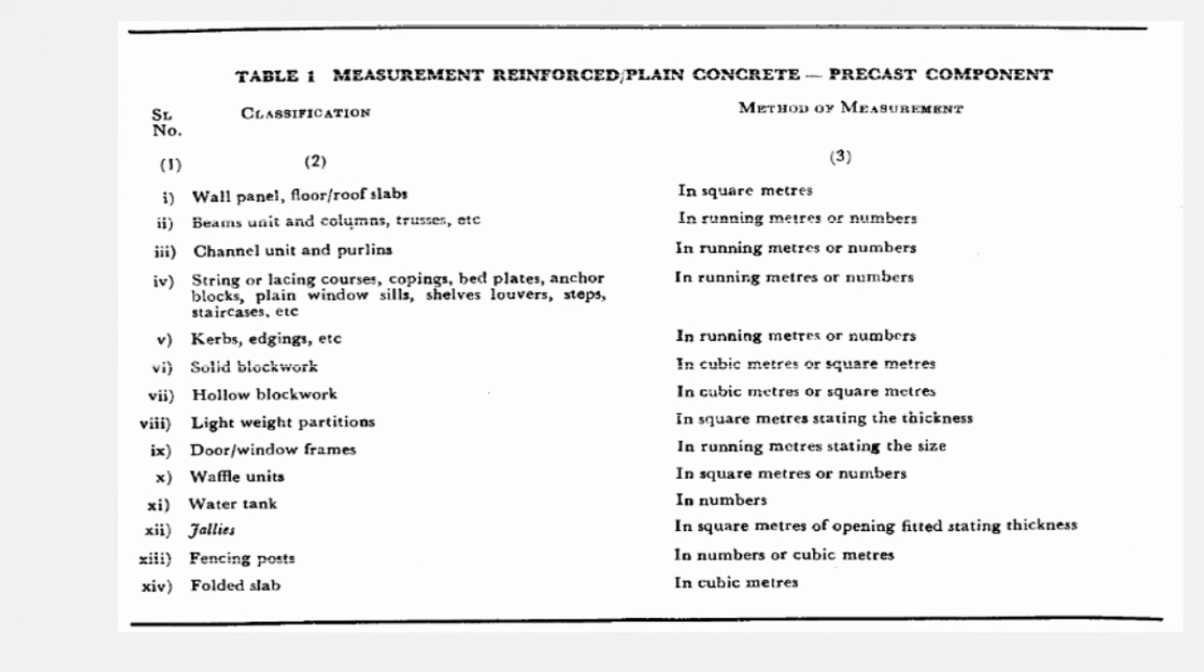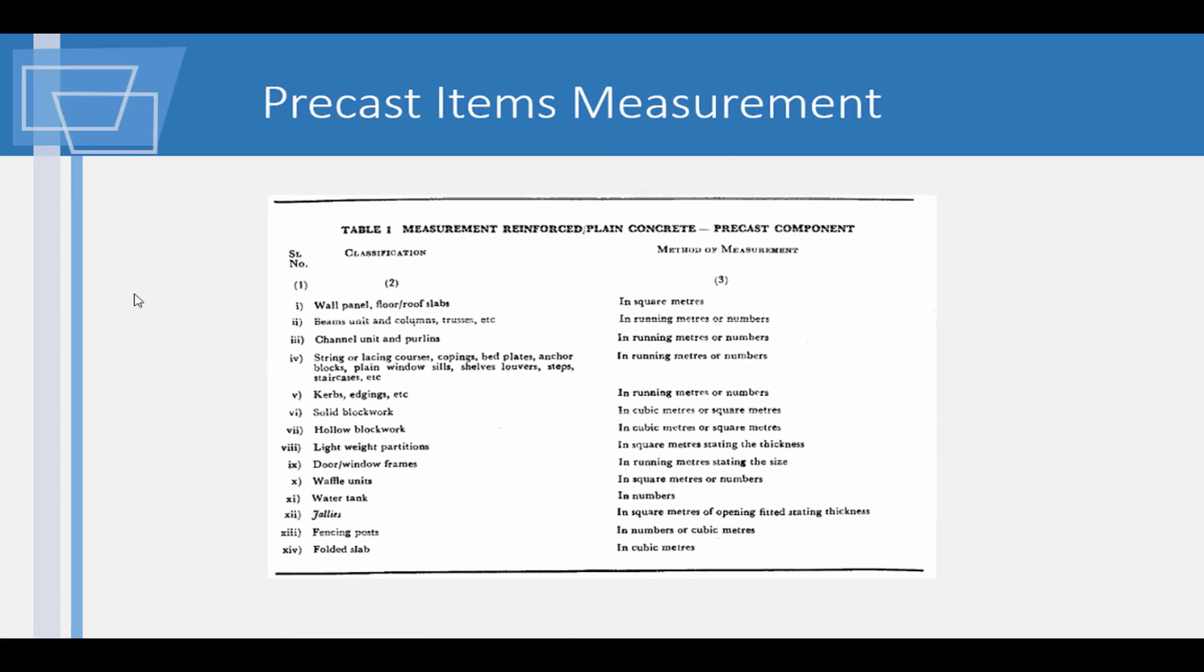The units of measurement for various precast concrete works is, as for instance, Table 1. When an item has been designated to be marked as in running meter or numbers, it boils down to the knowledge of overlap and wastage. When these are accounted for, the measurement can be specified in numbers. This is a general principle that can be applied to all such items of work.